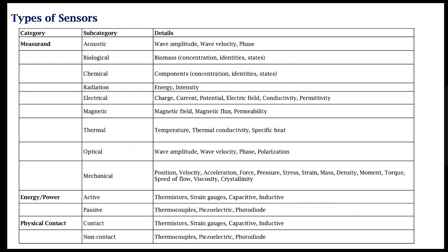Other sensor categories include optical systems measuring optical quantities, and mechanical quantities such as force, pressure, acceleration, angular velocity, stress, and strain. Another way to classify sensors is using energy or power — that is, whether they are active or passive. And another method is whether they have contact with the human body: some may be invasive, some are on the body but not inside, and some are non-contact.